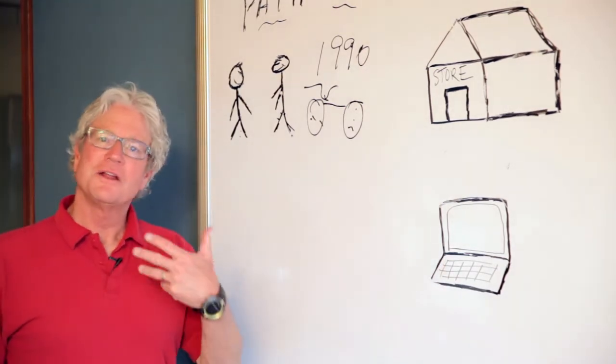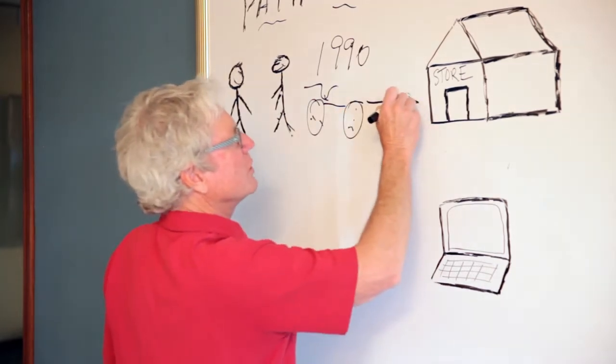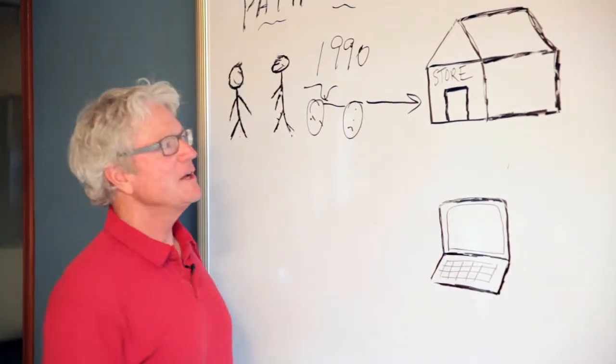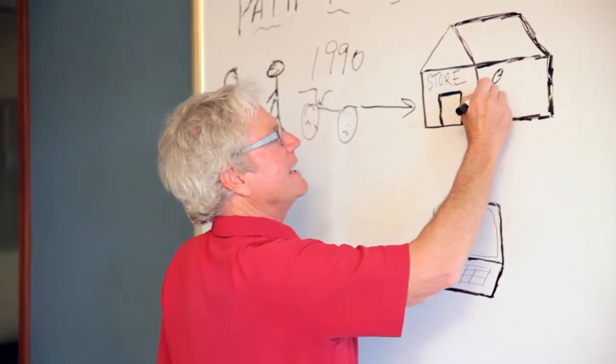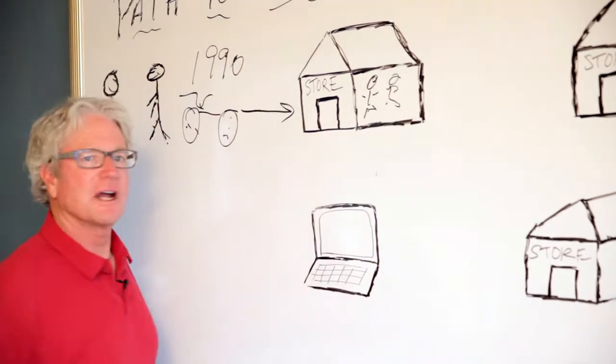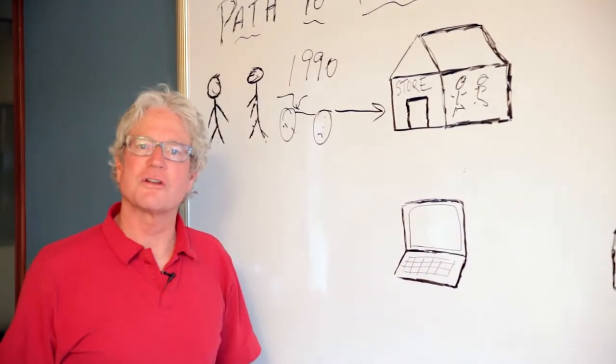In 1990 the only option that the consumer had was to go to a retail sporting goods shop and then look at that bike and talk with the retail salesperson. So they'd have a conversation about the bike, they talk about the features, the benefits, the pricing, those kind of things.